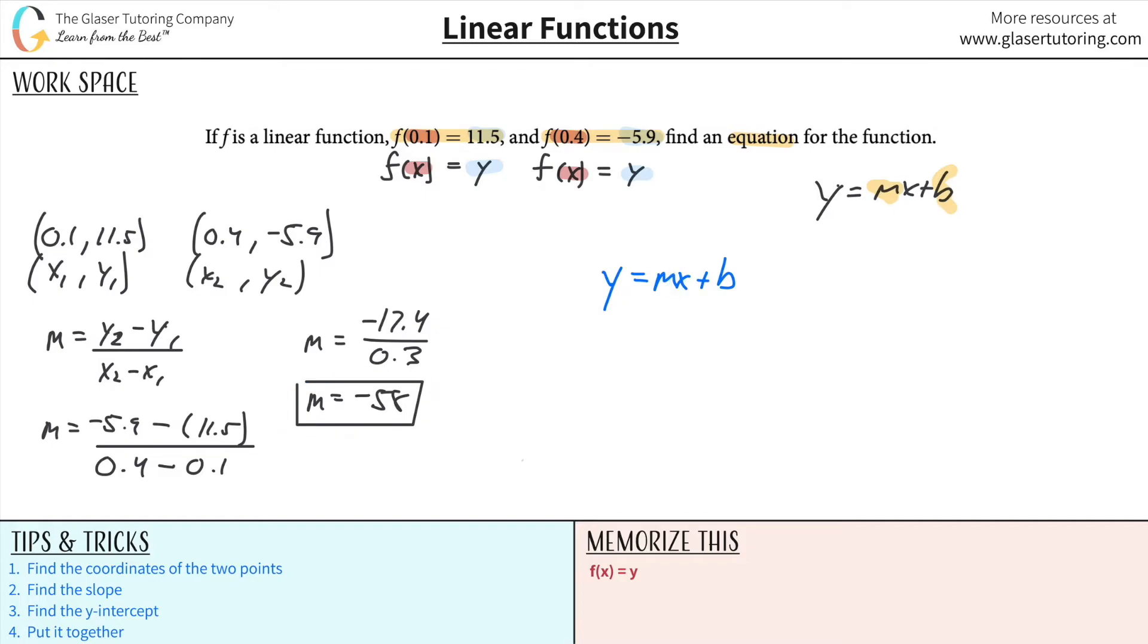Well, remember, on any linear line, here's your axis, here's the linear line, any point on this line can be plugged in for y and for x. Any point. Because these points have the same slopes and the same y-intercepts. They're all along the same line. So basically, what I'm saying is that you were given two points. You can choose either one of them and plug them in. It doesn't matter to me what you choose. I'm going to choose the first one just because there's no negative in it.